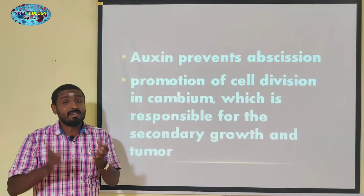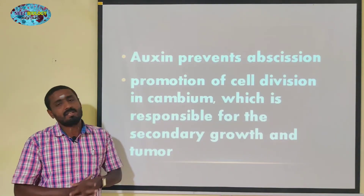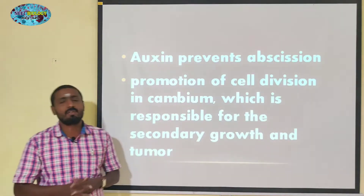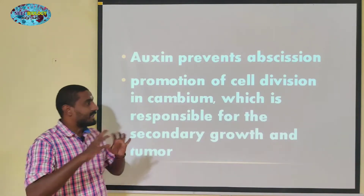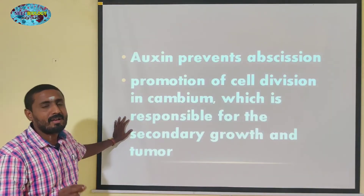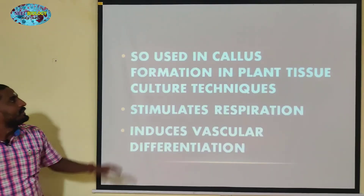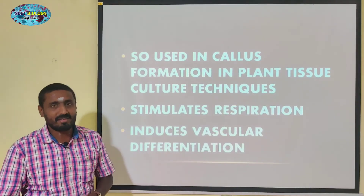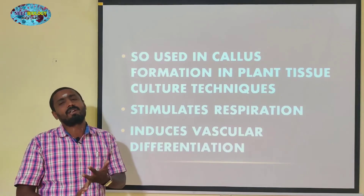A bit of the branches relate to xylem. Secondary growth is induced by auxin. Tumor is also induced. Structures are formed. Meristematic cells are induced. Cell elongation and secondary growth are among the key functions. All these things are related to auxin's physiological effects.